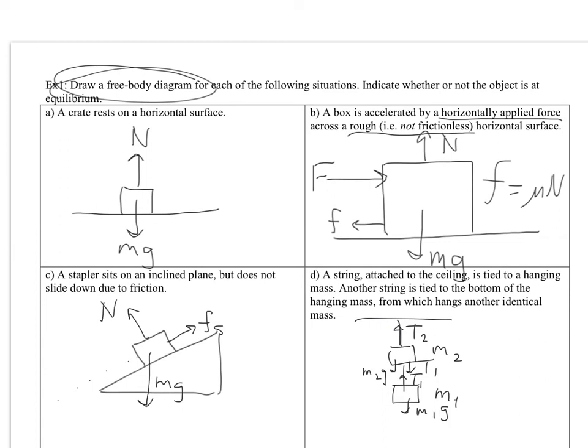However, that need not be the case. You can imagine that if this were happening in an elevator... This is actually going to be a question that you guys will be assigned later. If this were happening in an elevator and the whole elevator were moving up, then those tensions do not in any way equal the weights of the objects, or if it's accelerating downwards.